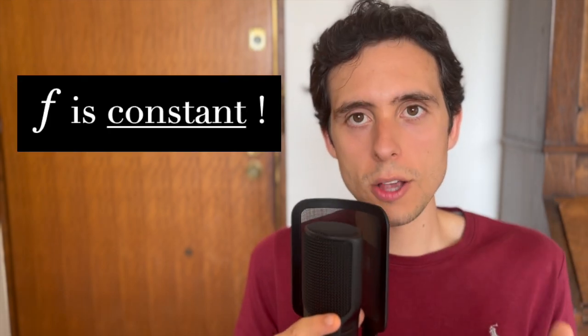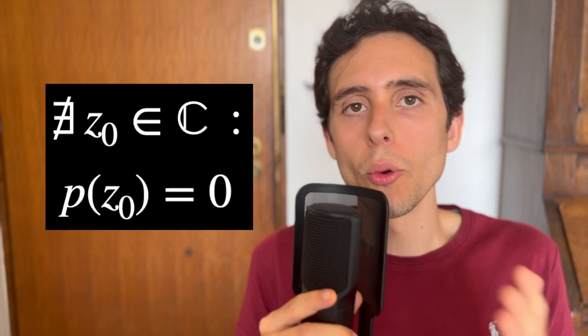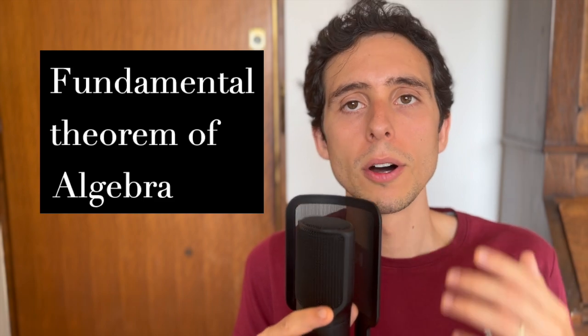So, then we found that f is constant. But wait a minute, f of z was 1 over p of z. So, if f is constant, p of z must be constant as well. But that's a contradiction because we assumed p of z to not be constant. And therefore, our hypothesis that p of z has no roots was false. And that's the proof of the fundamental theorem of algebra.